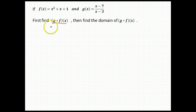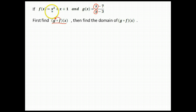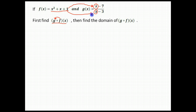So let's find our function first. g of f means we're going to take f and plug it into g. So we take our function g, which is x minus 7 over x minus 3, and we're going to replace each of these x's with our entire f function. So each of those x's is going to be replaced with x squared plus x plus 1.